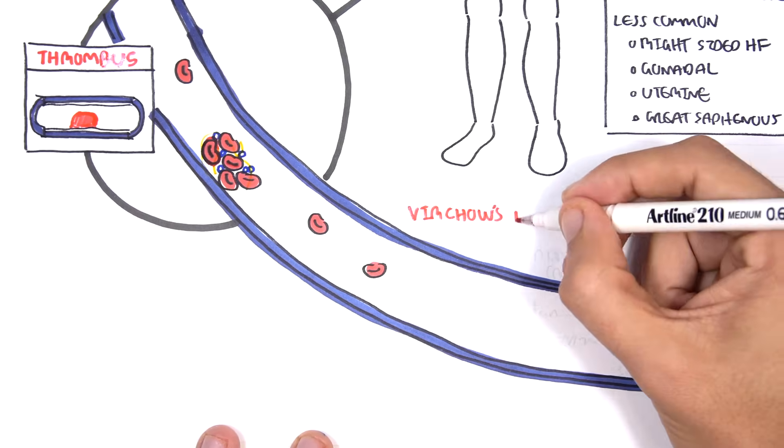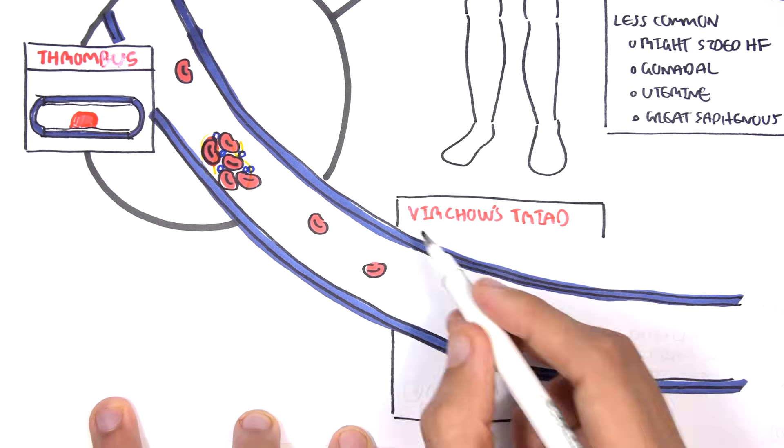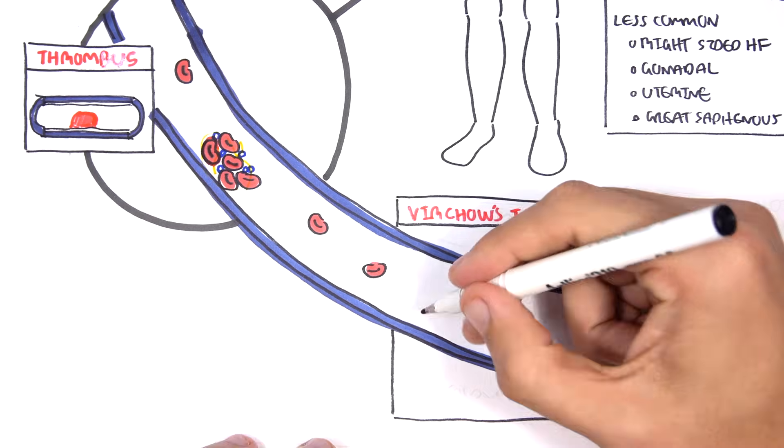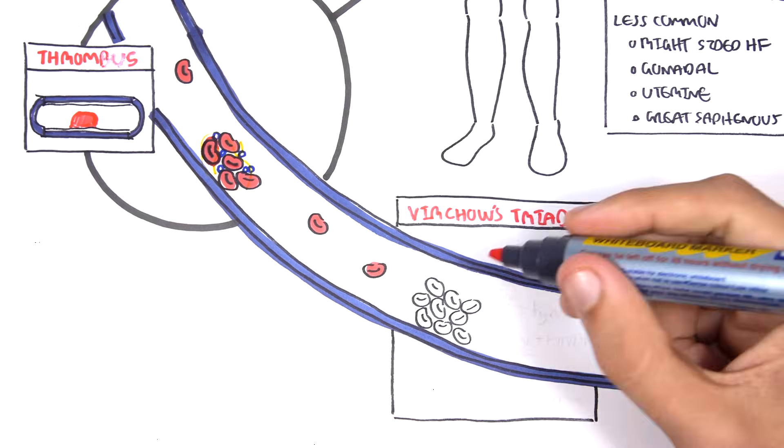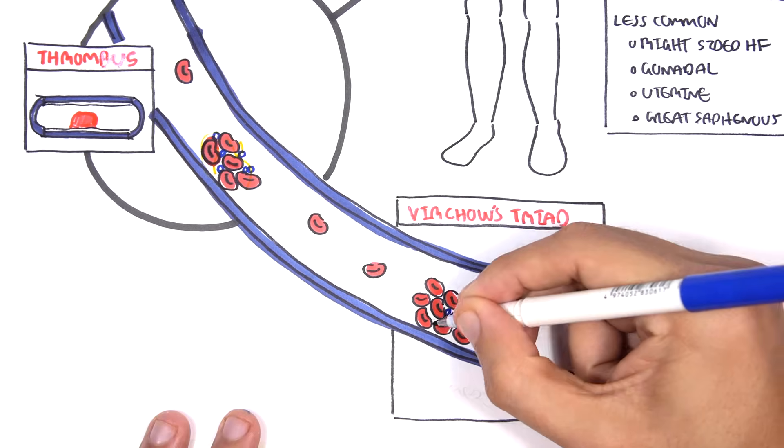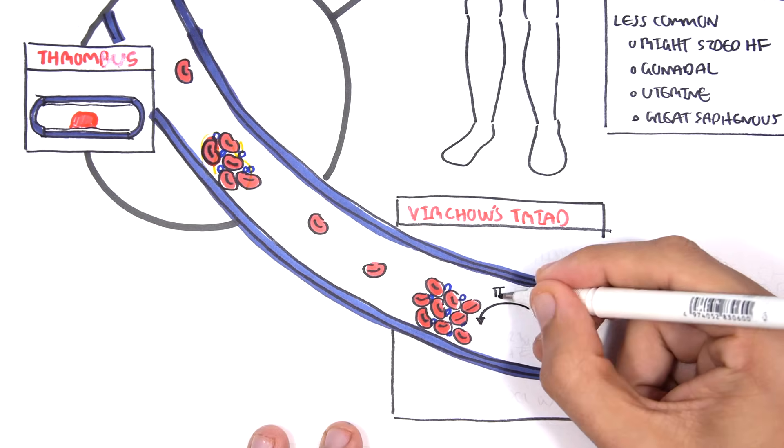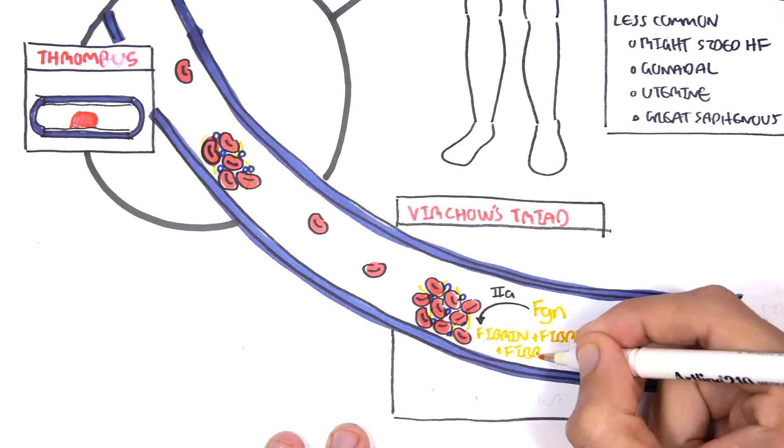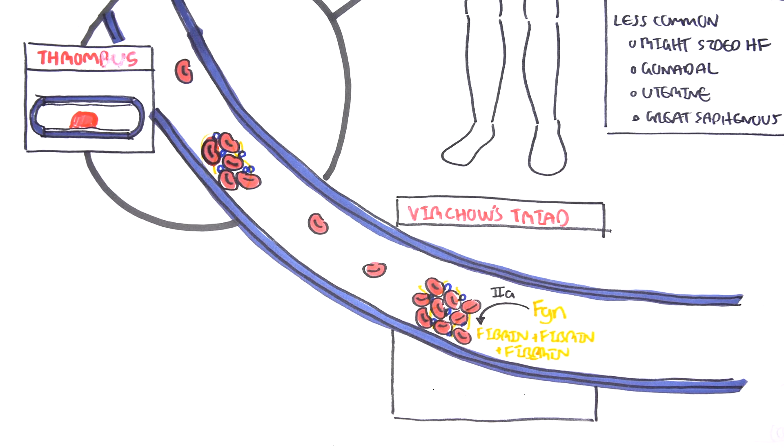Thrombus is caused by a variety of things, mainly caused by what's known as Virchow's triad. This is a triad of things that leads to thrombus formation. So just to recap what a thrombus is, it's essentially red blood cells clumping together with platelets, and then you have fibrinogen, which is a clotting factor, which gets converted by thrombin, which is factor 2a, into fibrin.